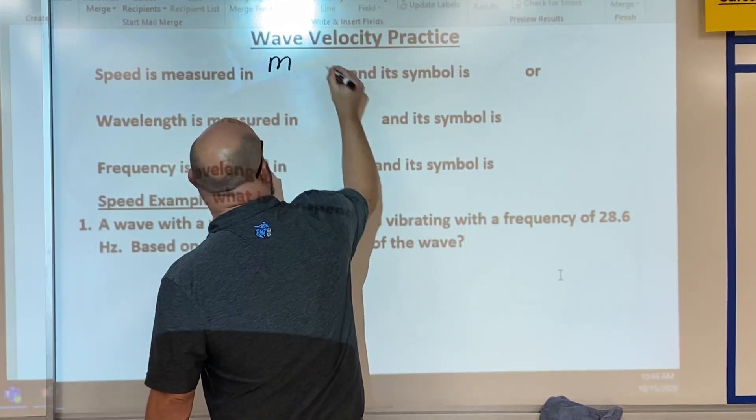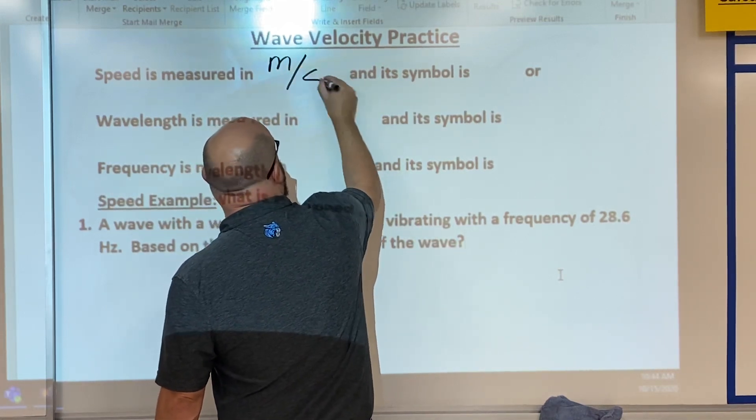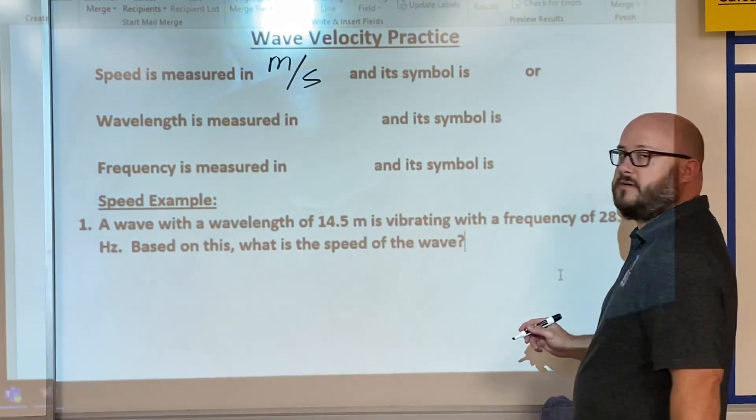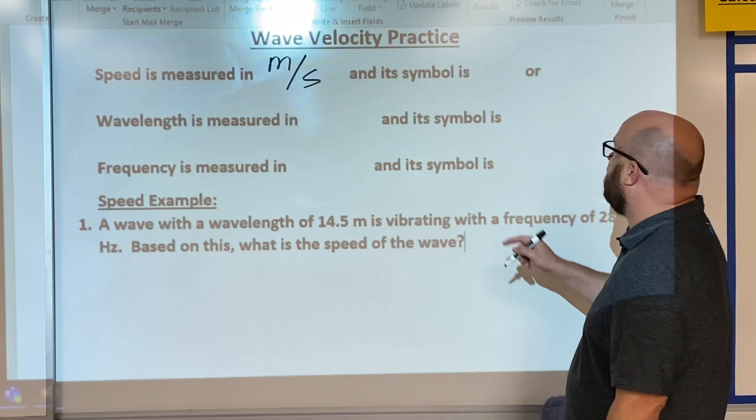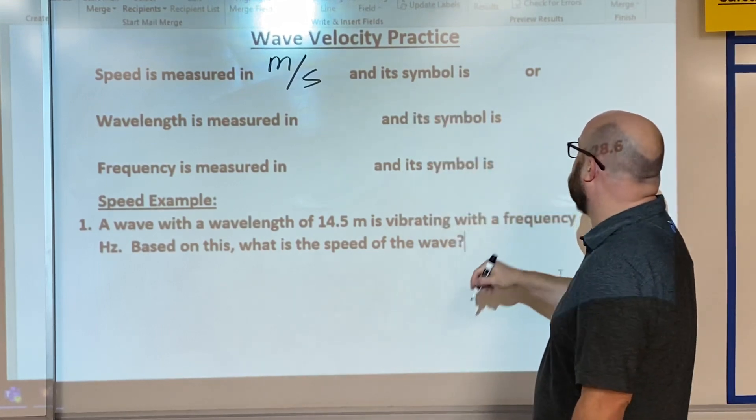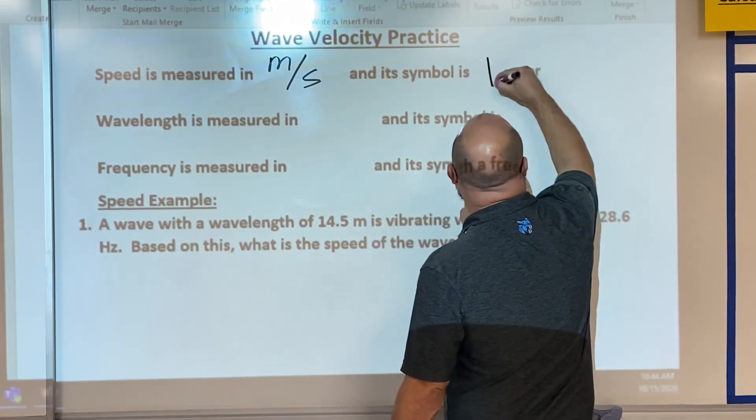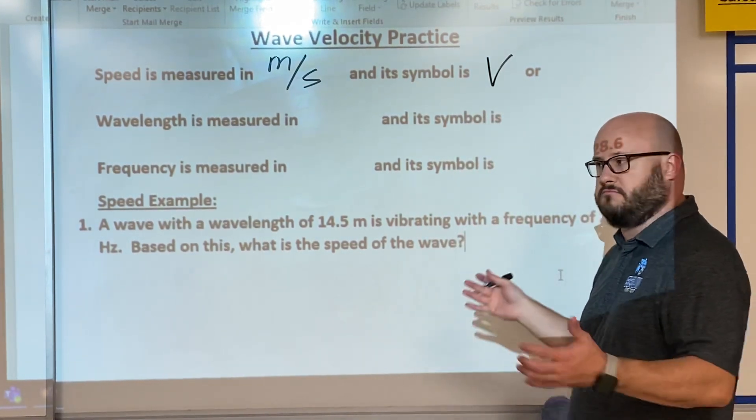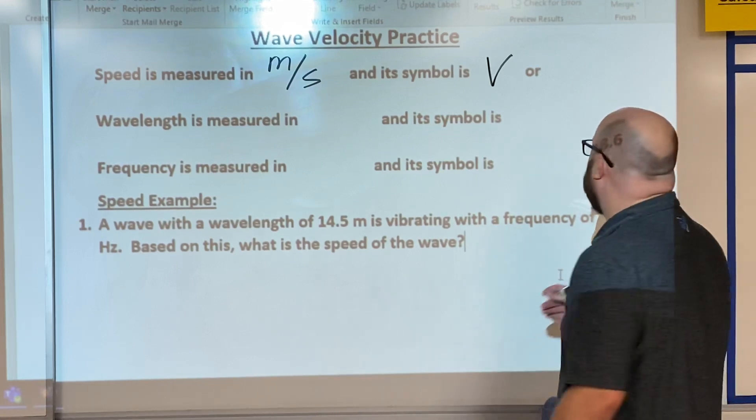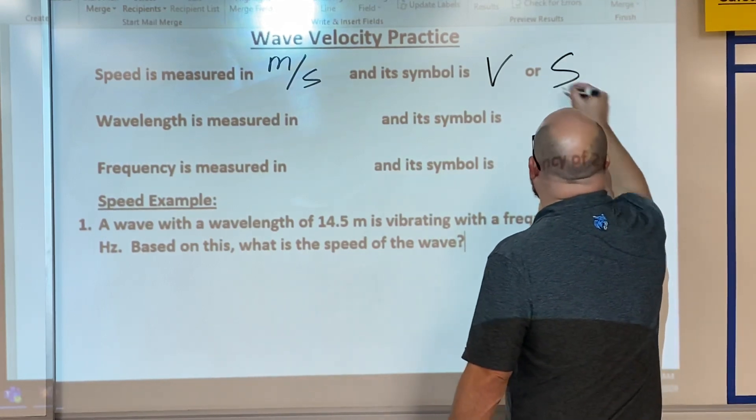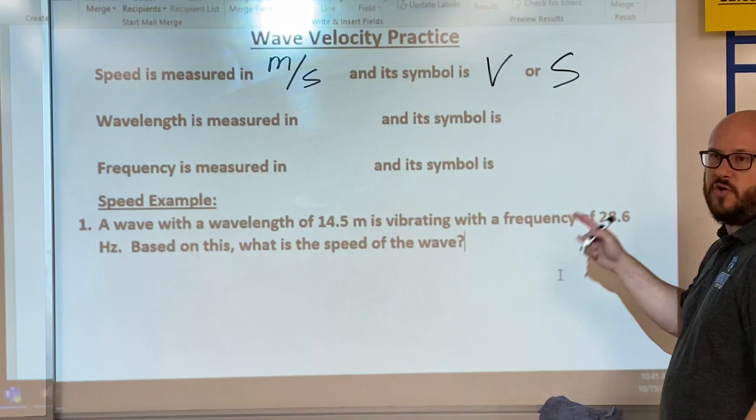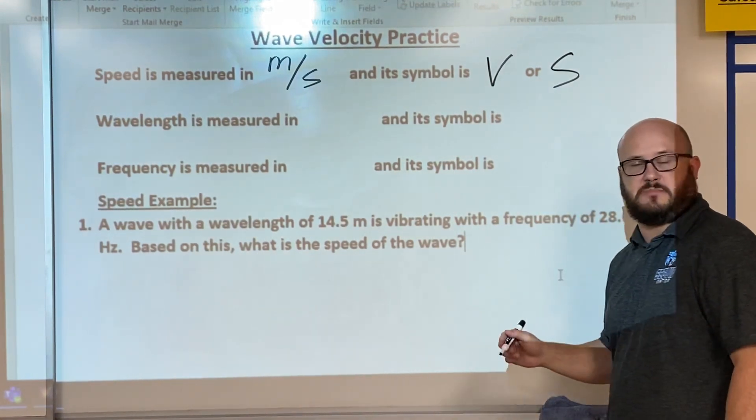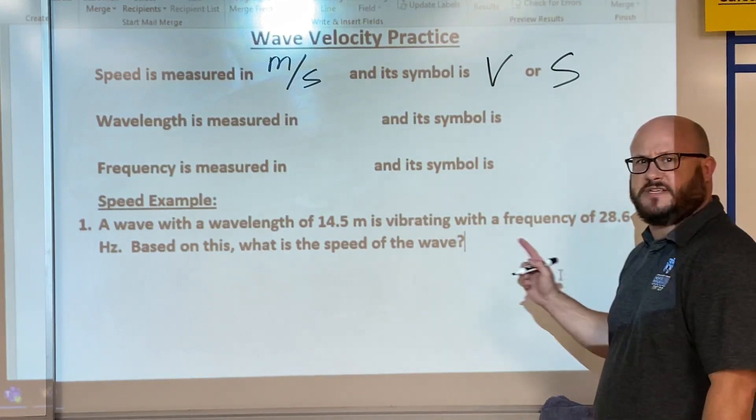And we need a time reference per second, so how many meters per second is that wave traveling. The symbol for speed you'll either see V for velocity. Velocity and speed are very close to one another, or S. Velocity or speed, you may see either one. For us it doesn't make a difference.